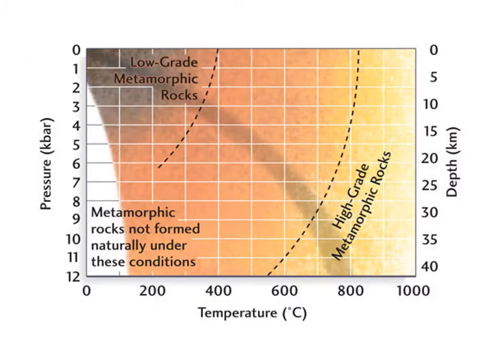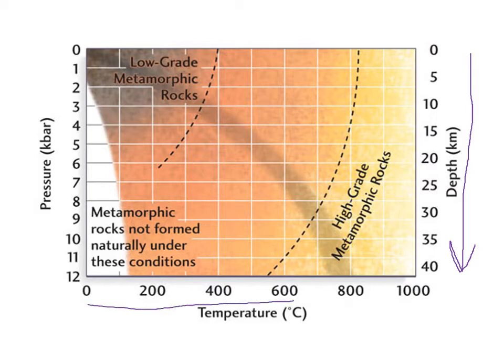The main things influencing metamorphic rocks and causing them to change from other types of rock are basically heat and pressure. If we look at the right y-axis, we can see depth — as we go down, we're going deeper into the earth. As you go deeper, we have a geothermal gradient, so the temperature goes up too. On the x-axis, temperature increases as we go from left to right, and as we go deeper, the pressure increases.